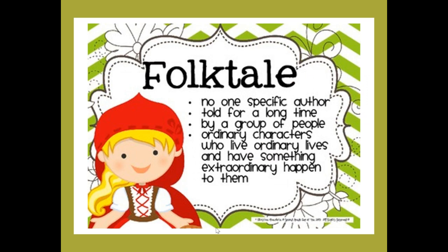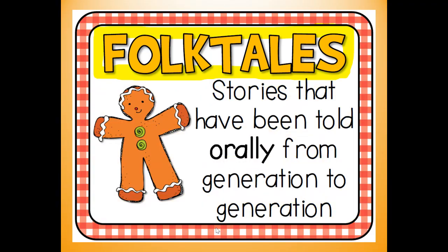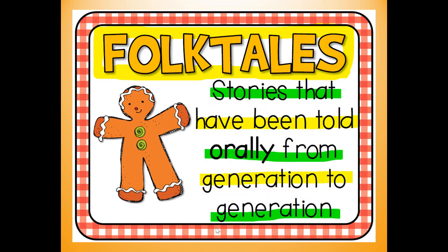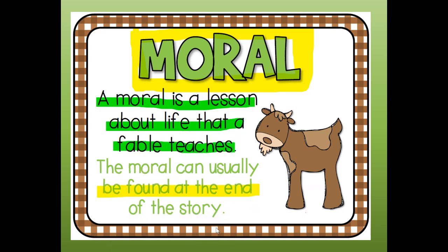In the story for this lesson, Two of Everything is a folk tale. A folk tale has no one specific author, and has been told for a long time by a group of people. It features ordinary characters who live ordinary lives and have something extraordinary happen to them. Folk tales are often told orally from generation to generation, and they often have a moral — a lesson about life — usually found at the end of the story.